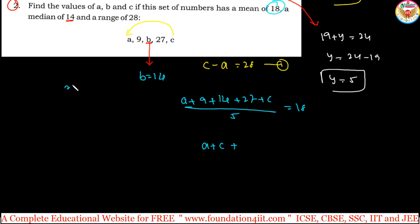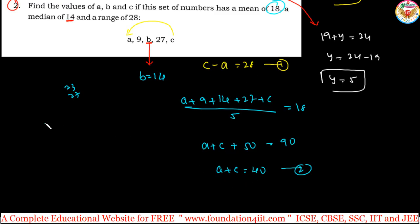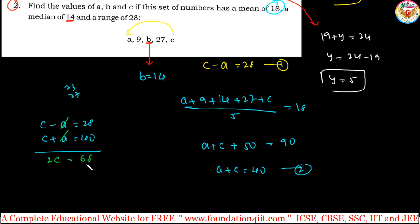Simplifying: a + c + 50 = 90, so a + c = 40. That is equation 2. Now we have two equations: c minus a = 28 and c plus a = 40. Using the elimination method, adding both equations: 2c = 68, so c = 34.